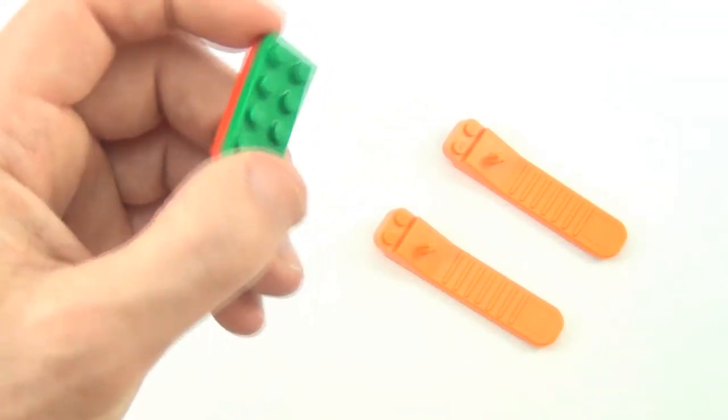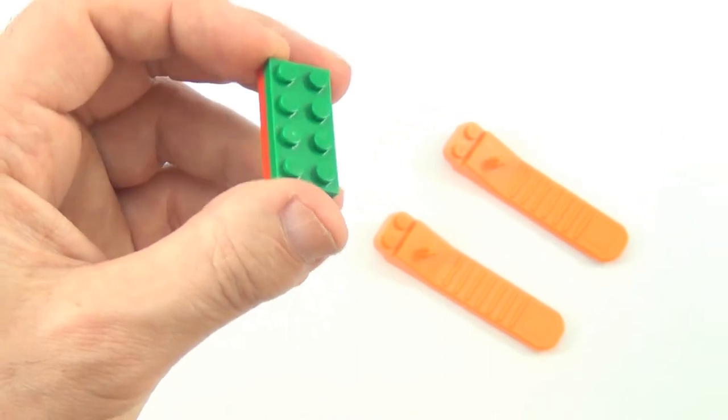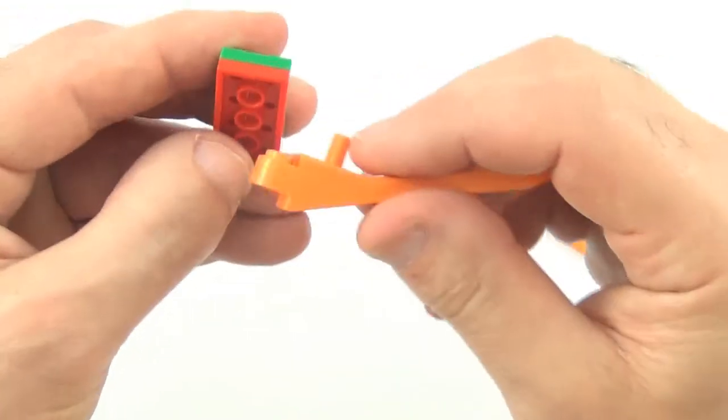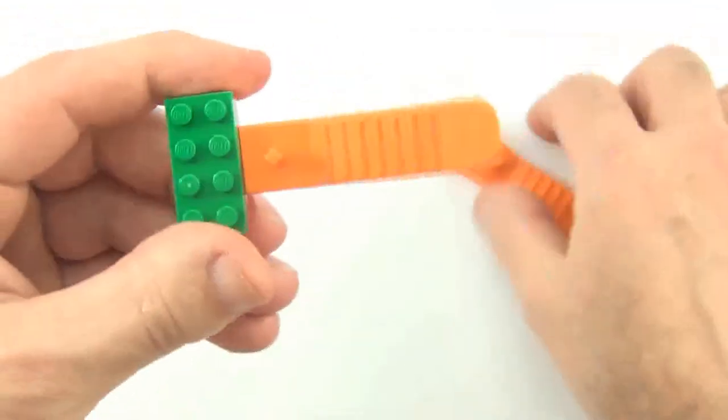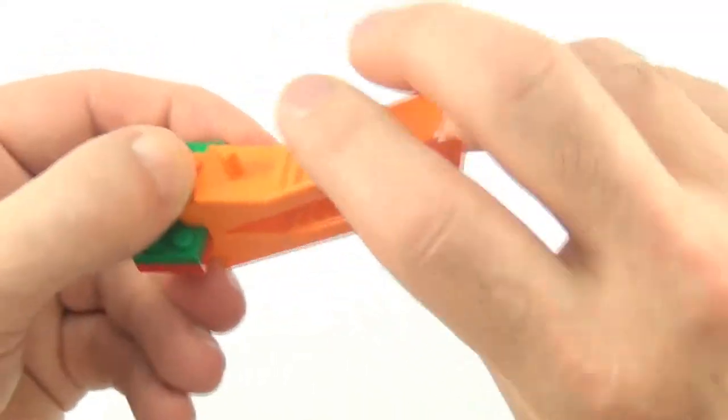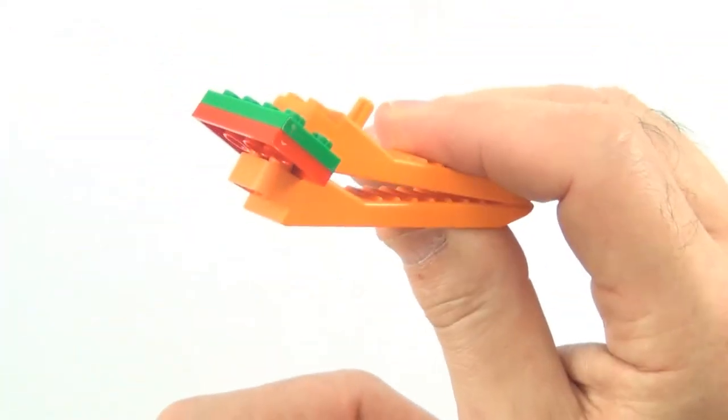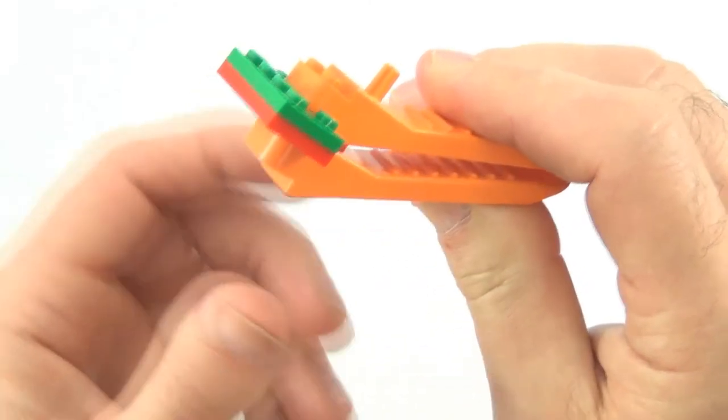Separating two 2x4 plates is a little bit different than separating 2x2 plates. If we get one brick separator underneath, another one on top, squeeze them together similar to the 2x2 plates, see how they don't quite come apart the same way.